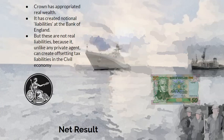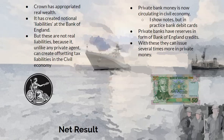The Crown has appropriated real wealth and created notional liabilities at the Bank of England, but these aren't real liabilities — because unlike any private agent, the Crown can create offsetting tax liabilities on the civil economy. Issued money is not really a liability; it is just a means by which the civil economy can offset the tax the Crown imposes on it. But private bank money is now circulating in the civil economy. The private banks now have reserves with the Bank of England, and with these reserves they can issue several times more in private money than the Crown created in royal money.